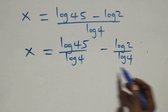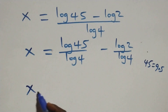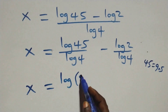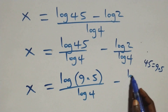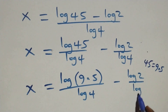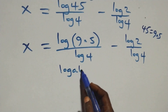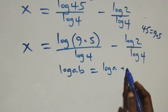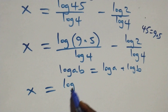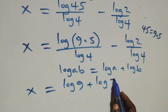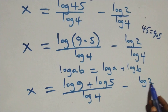We can rewrite 45 as 9 times 5. Using the product rule of logarithms where log(a × b) equals log a plus log b, the numerator becomes log 9 plus log 5. So x equals (log 9 plus log 5) over log 4, minus log 2 over log 4.